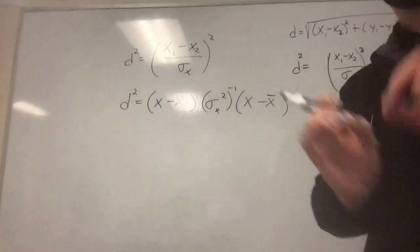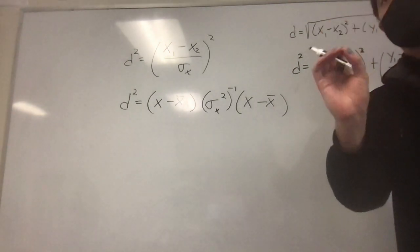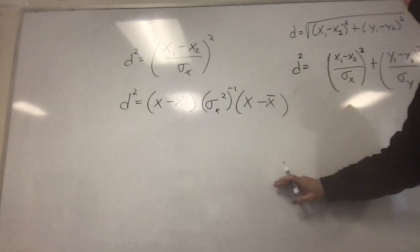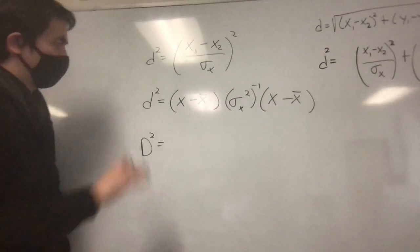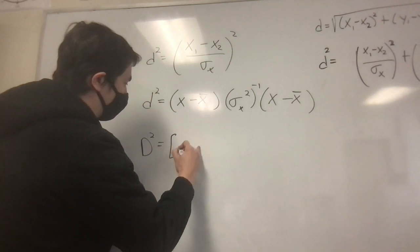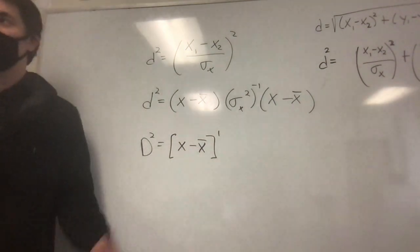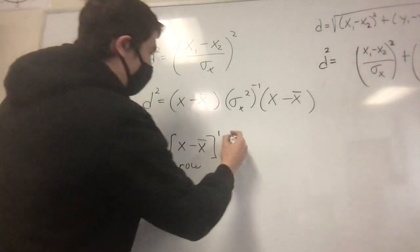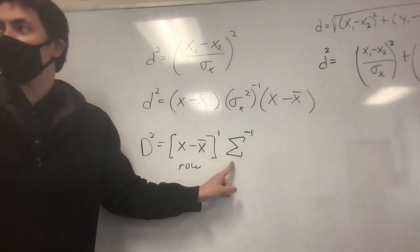There will be one point in the very center of all your data called the mean point — the average X value and average Y value. Now we can extend this to multiple variables through the use of matrices. We'll call this capital D squared, and write it as a system of matrices: a row vector, times the inverse covariance matrix, times a column vector.